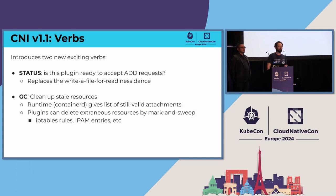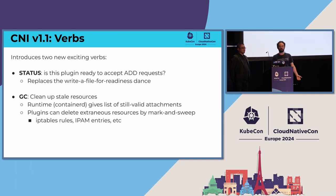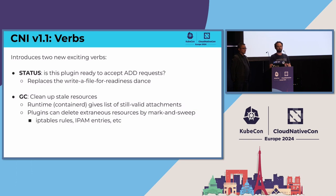The other major verb being added to CNI 1.1 is garbage collection. The runtime — containerd, multus, or CRI-O — gives the CNI plugin or plugins a list of valid attachments. The plugins can then use this as an opportunity to delete extraneous resources by some sort of mark-and-sweep or garbage collection. The extraneous resources that often get left behind are IP tables rules or, most critically, IPAM entries. Stale IPAM entries are no fun — running out of IP addresses is a disastrous event for a node. So CNI 1.1 has new exciting verbs solving real problems, three years at a time.